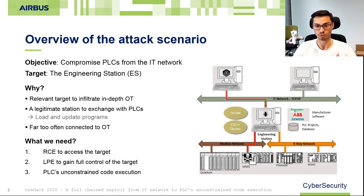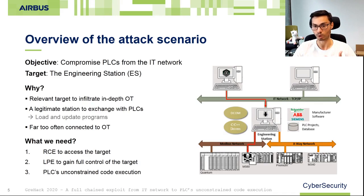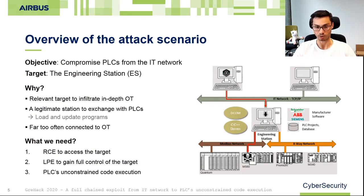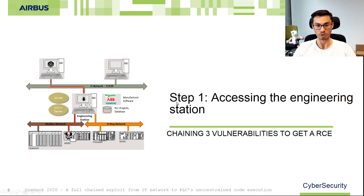What we need first is to find a remote code execution to access the relevant target from an IT access. Then we have to find a local privilege escalation to gain full control of that target — it's always better to do exactly what you want on such a station. Finally, we have to find a way to communicate with the PLC from this station in order to inject a new payload. Now I'll let Flavian speak about how to access this engineering station.